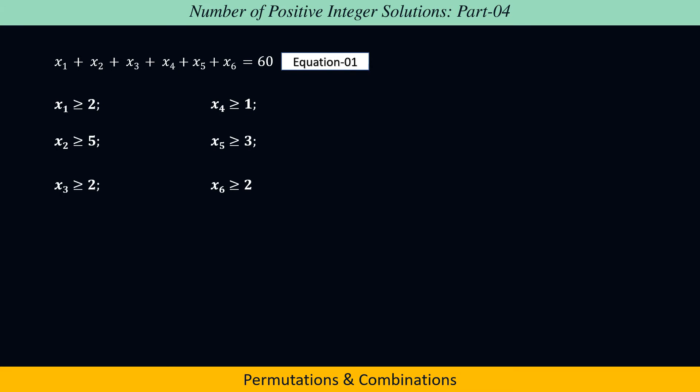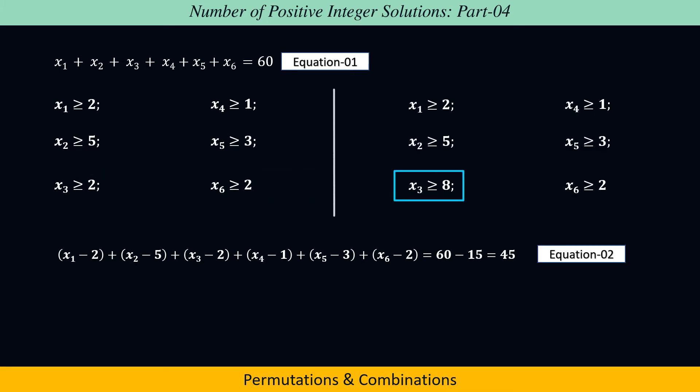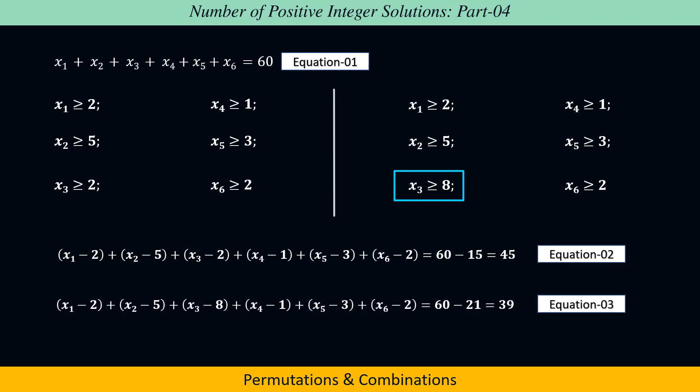As per case 1, where x3 ≥ 2 and all other inequalities remain the same, equation 1 can be rewritten in the form of equation 2. As per case 2, where x3 ≥ 8 and all other inequalities remain the same, equation 1 can be rewritten in the form of equation 3. Now we will find the number of non-negative integer solutions of equations 2 and 3 separately.